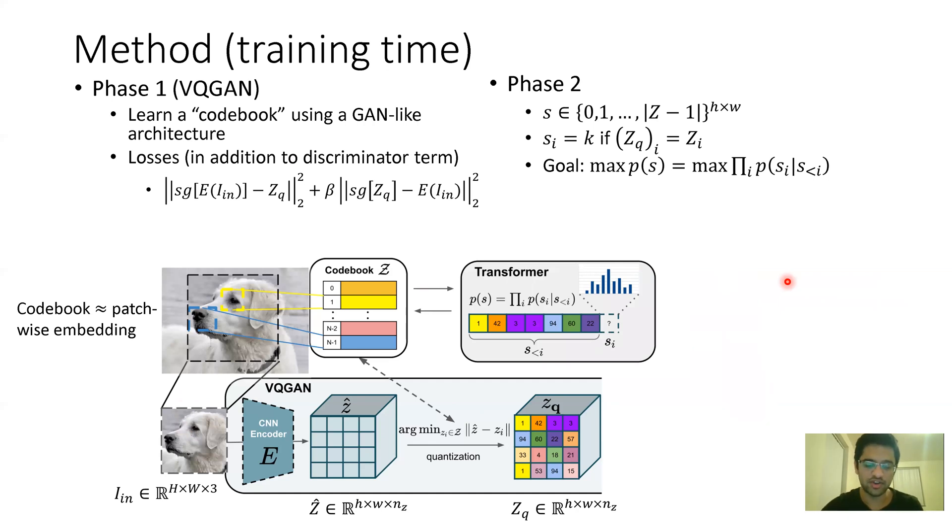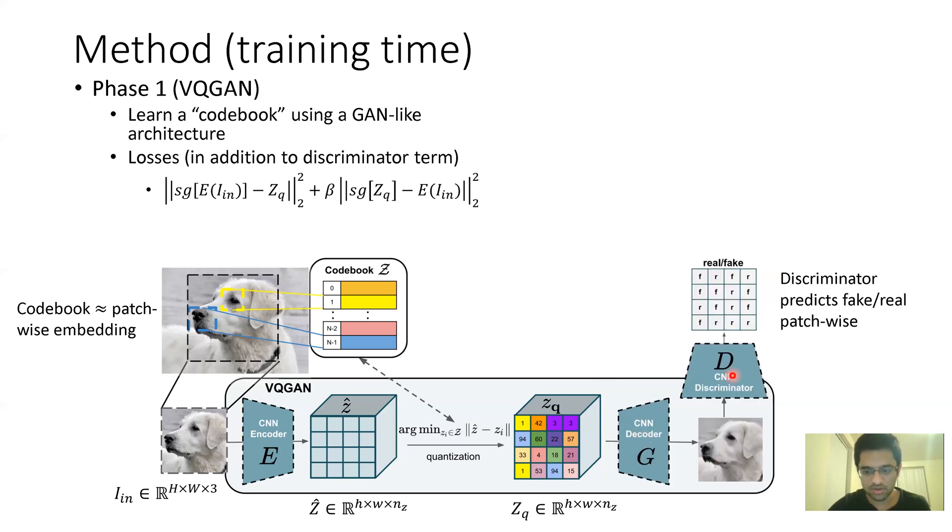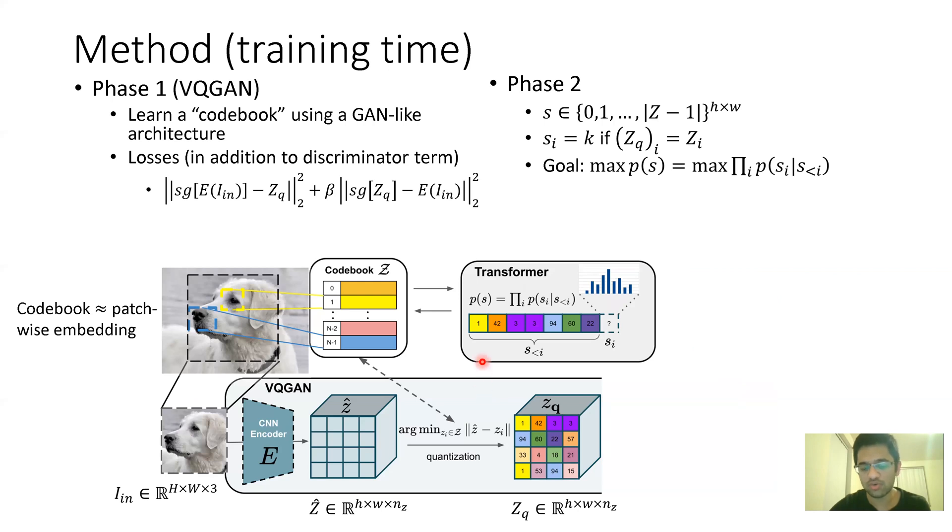In phase two of their training, they basically have a transformer and they forget about the decoder and the discriminator in this part. They want to now train a transformer that can autoregressively generate a sequence of indices of the codebook. For example, if the transformer generates 1, 42, and 3, you know that 1 corresponds to this vector, 42 corresponds to some vector, and 3 corresponds to some vector. You can construct such a Z sub Q representation and then pass that to the decoder to get a sampled image.